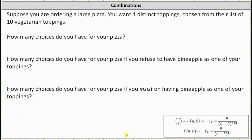Suppose you are ordering a large pizza and you want four distinct toppings chosen from a list of 10 vegetarian toppings. The first question is: how many choices do you have for your pizza? Because you are selecting four distinct toppings and the order of the toppings does not affect the pizza, we can answer the question using a combination. Since you are choosing four distinct toppings from 10, the number of choices is 10 choose 4.